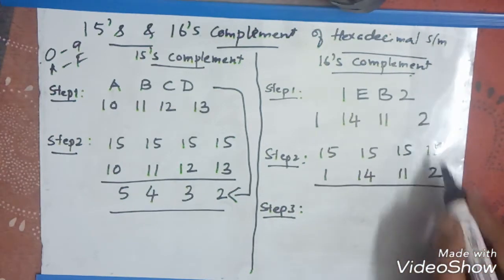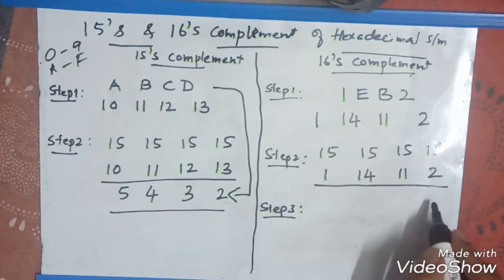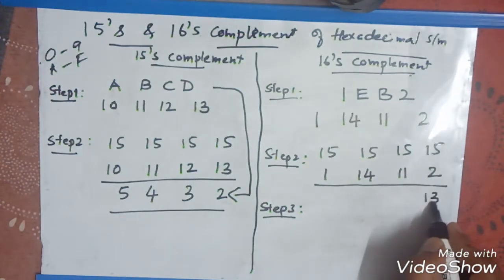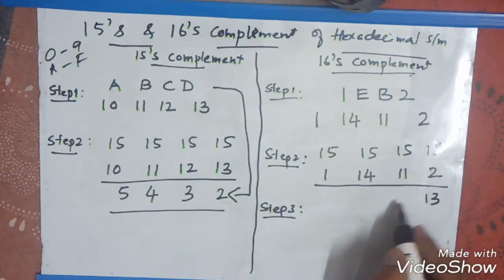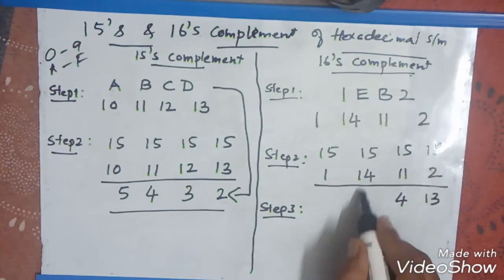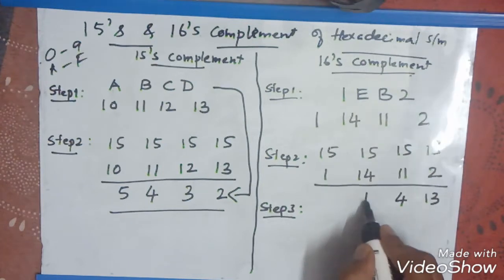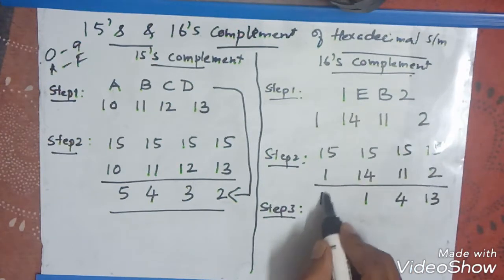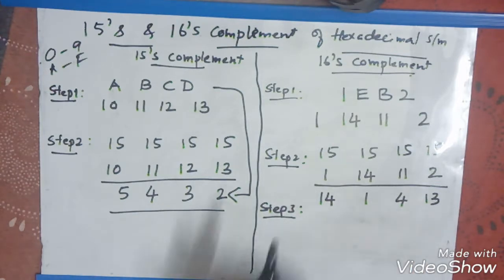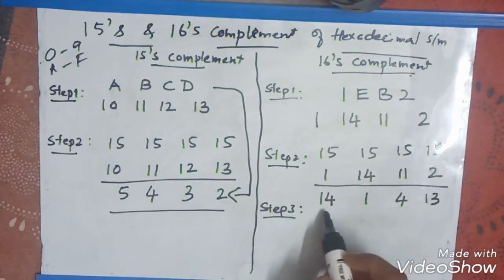Now, subtract it. 15 minus 2 is how much? 13. Then, 15 minus 11 is 4. 15 minus 14 is 1. 15 minus 1 is 14. Now, you can see there is a difference here. Earlier we got in the fifteenth complement, single digit number. Now, you are getting a two digit number when you subtract it with the 15.